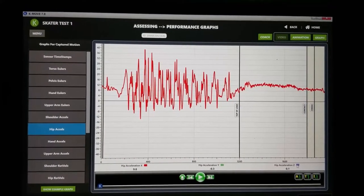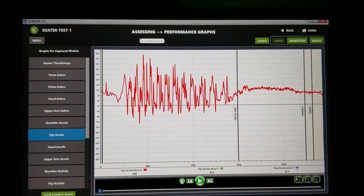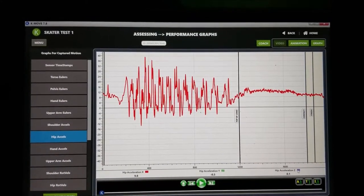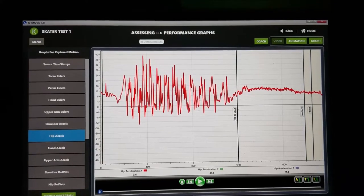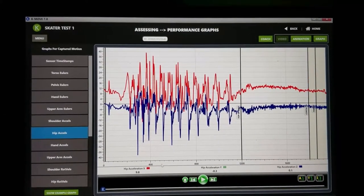So this red line is actually showing hip acceleration in the x direction. So that would be to either the immediate left or immediate right of the skater as they're moving. So these peaks are interesting because we're going to want to try to balance these with these blue peaks.